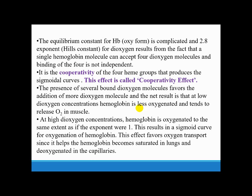This is the process when oxygen is coming from lungs and going to muscles where it will release the oxygen. At high dioxygen concentration, hemoglobin is oxygenated to the same extent as if the exponent were 1. This results in the sigmoid curve for oxygenation of hemoglobin. This effect favors oxygen transport since it helps the hemoglobin become saturated in lungs and deoxygenated in the capillaries.